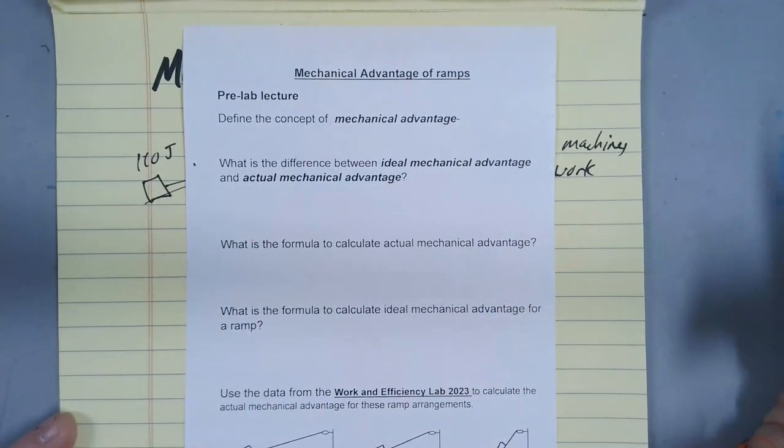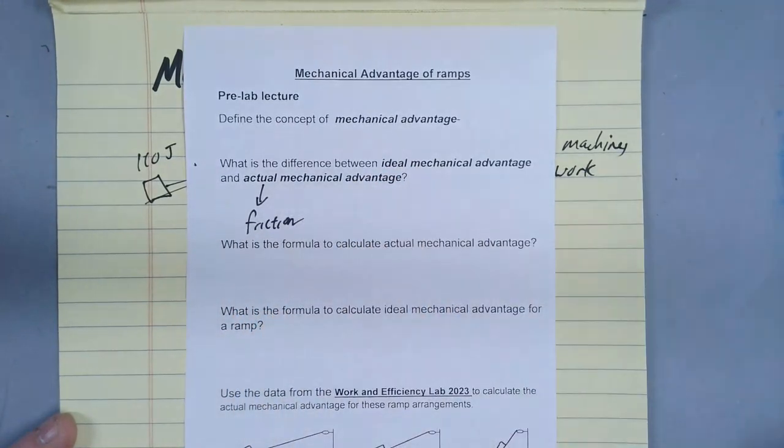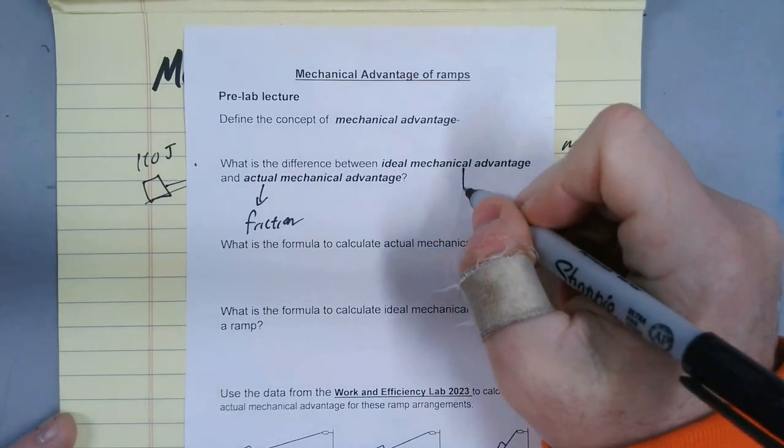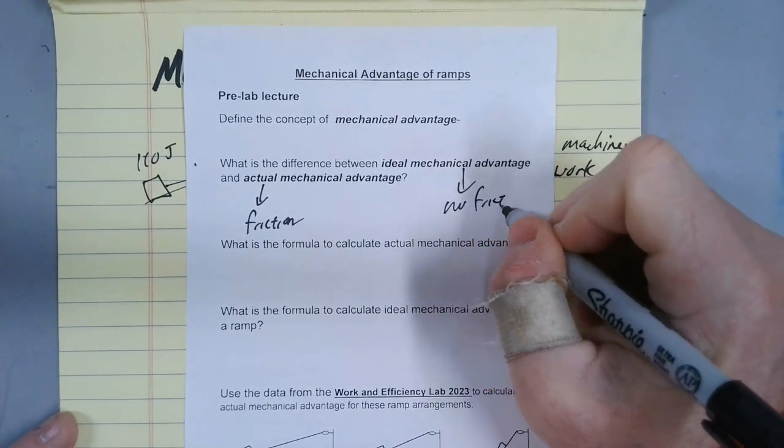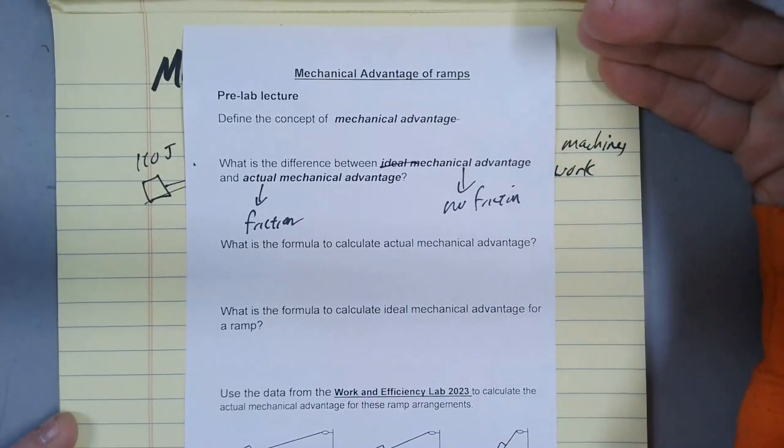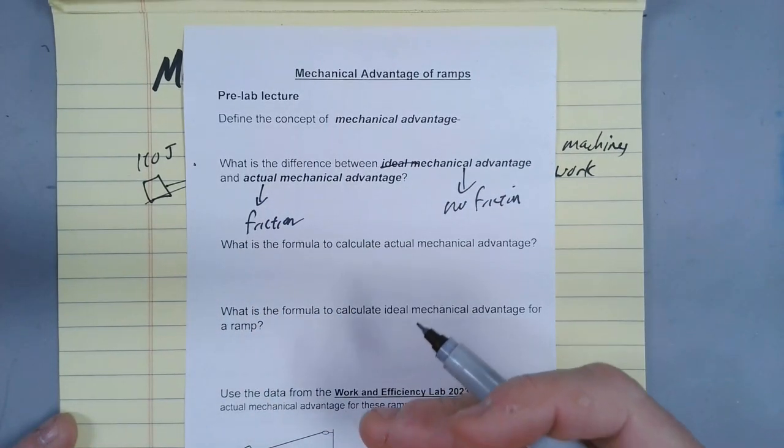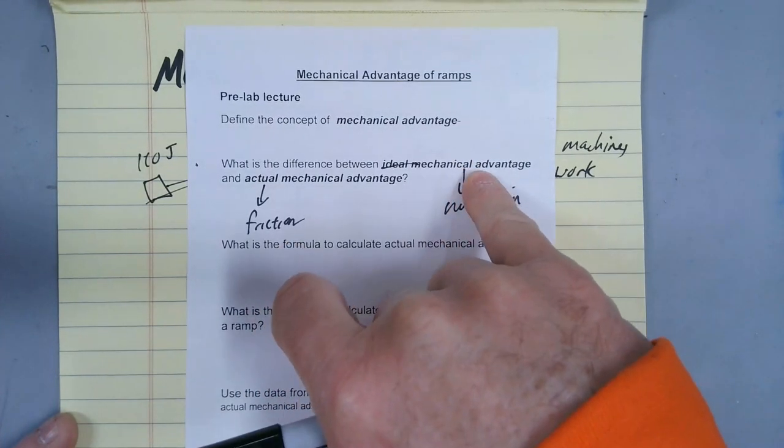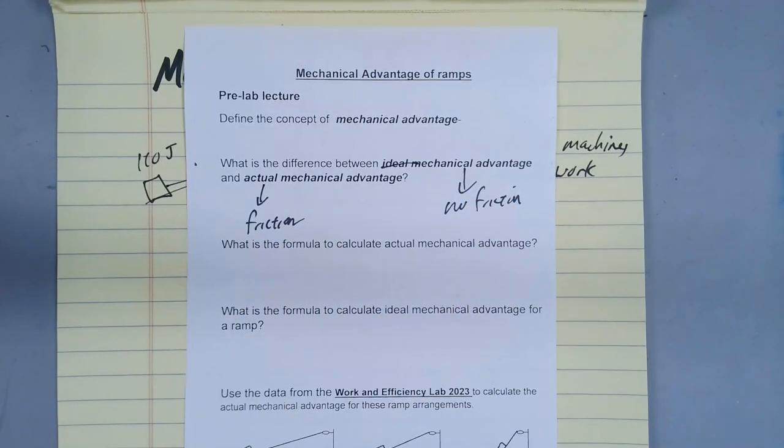And the big difference between these two is that the actual one takes friction into account. Because we know with a machine, you're always going to have to overcome some friction. The ideal mechanical advantage doesn't consider friction, which is an ideal situation. The machine can help you this much, but you actually have to overcome some friction, so the machine doesn't help you as much as you think it should. That's the difference between ideal and actual. The ideal doesn't consider the friction that you have to overcome. The actual mechanical advantage does.